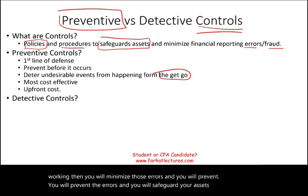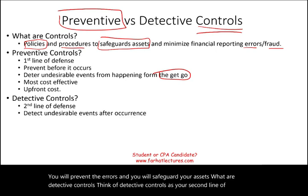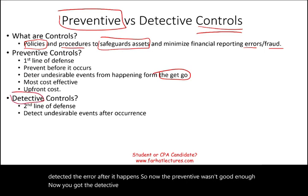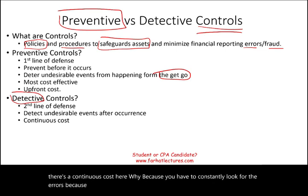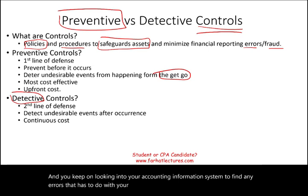Detective controls are your second line of defense. They detect the error after it happens — so preventive wasn't good enough and now you need to find the error. There's a continuous cost here because you have to constantly look for errors. With preventive you set up the system once; with detective, you keep on looking into your accounting information system to find any errors related to your financial reporting and make sure your assets are protected.